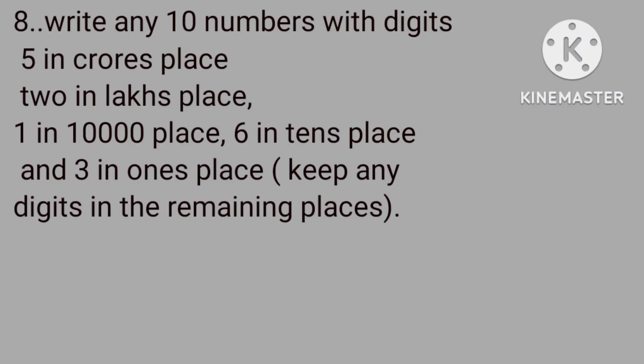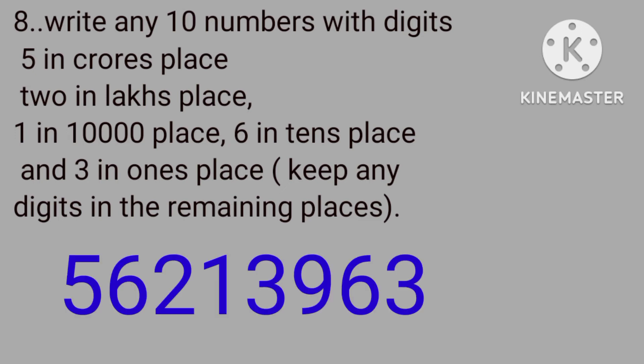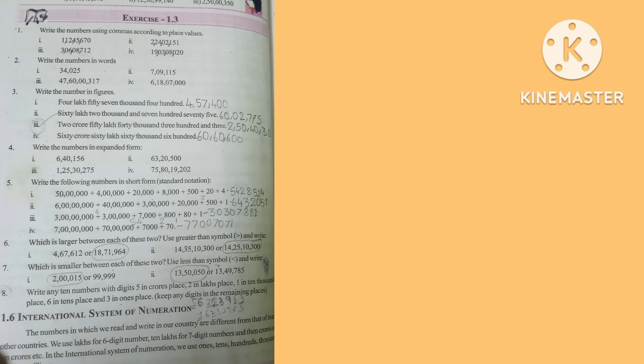Eighth question — write any 10 numbers with digit 5 in the crores place, 2 in the lakhs place, 1 in the ten-thousands place, 6 in the tens place, and 3 in the ones place. Keep any digits in the remaining places. In the answer: 5 in crores, 2 in lakhs, 1 in ten-thousands, 6 in tens, 3 in ones — and I used 6 in ten-lakhs place, 3 in thousands place, 9 in hundreds place. You can use any digit in the remaining places.